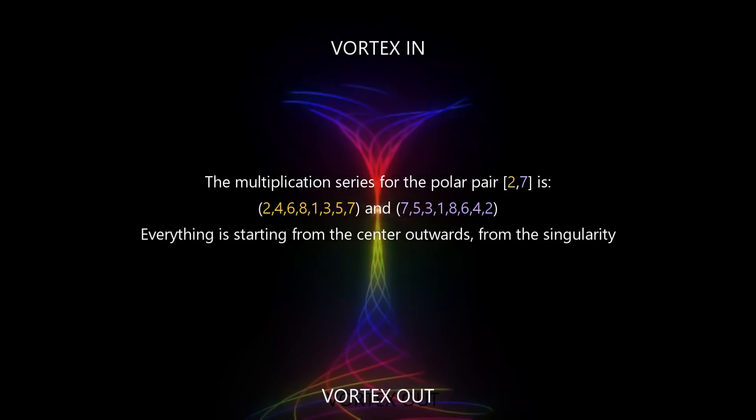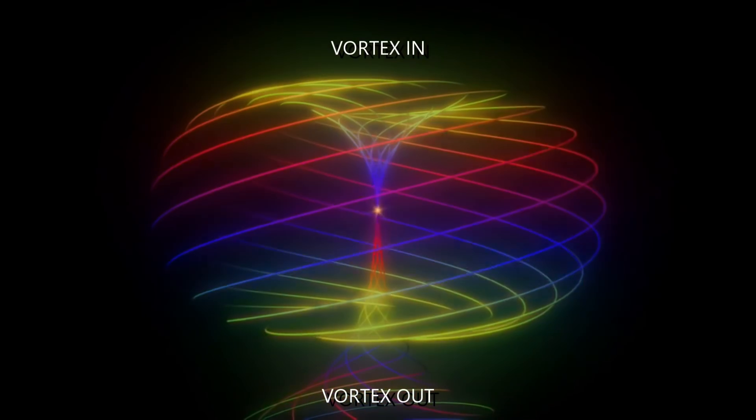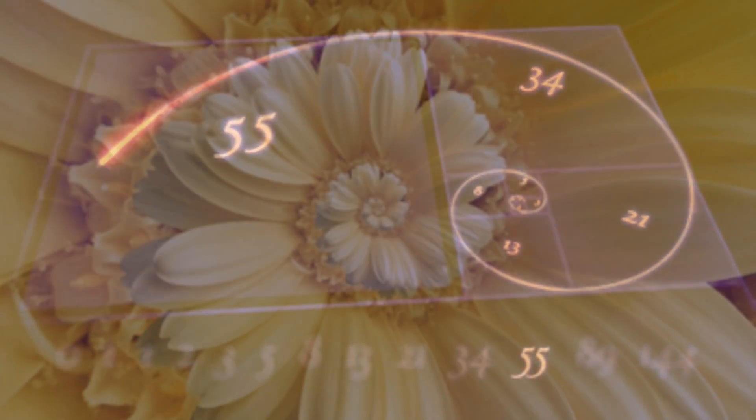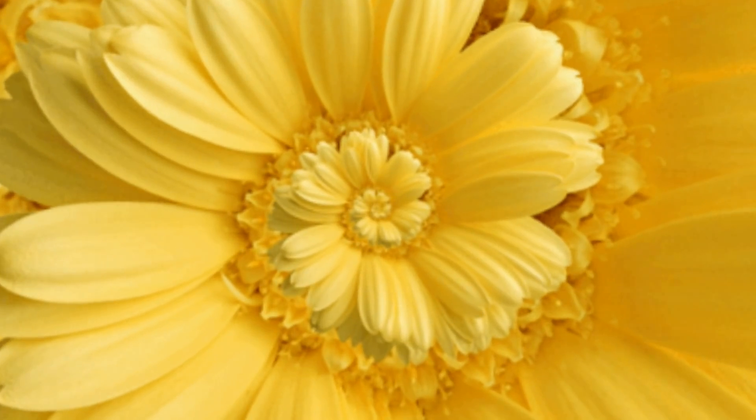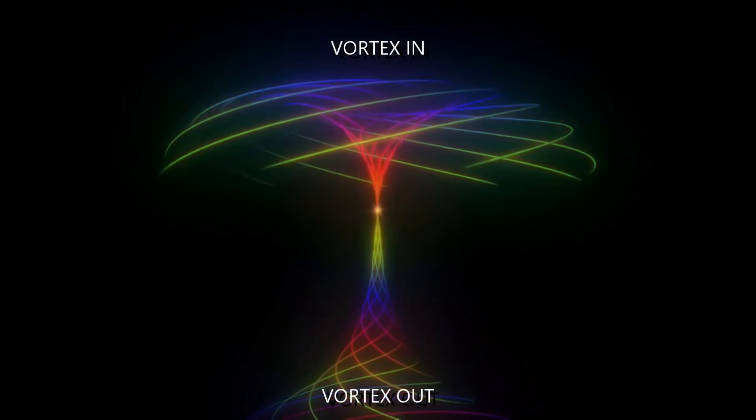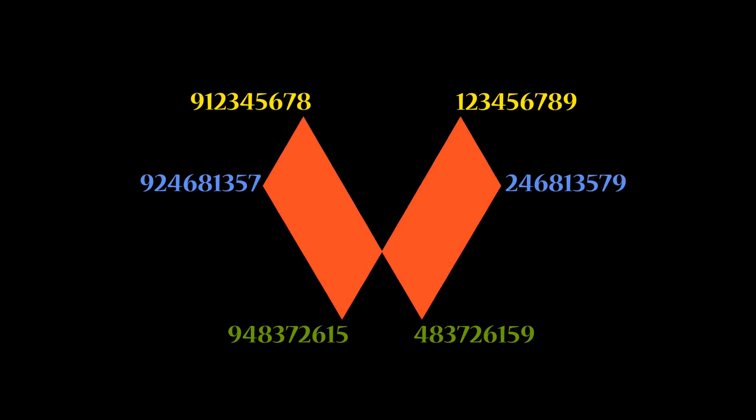Everything is starting from the center outwards, from the singularity. Nature is expressing itself with numbers. The symmetry of our decimal system is a principle of nature. The 9 axis causes the doubling circuit and it is the point towards which matter converges and away from which it diverges or expands. Thus, the polar pairs will be mirror images of each other, both flowing in opposite directions from the central axis.